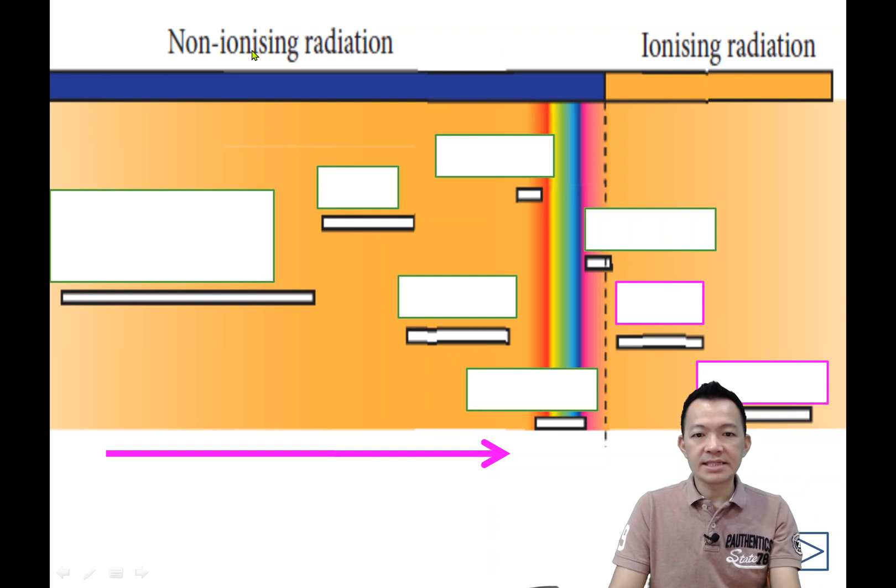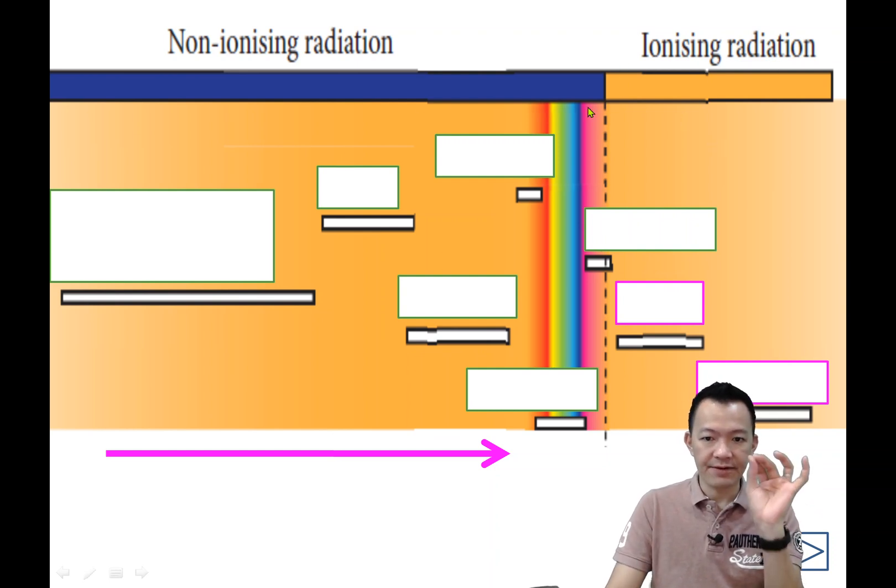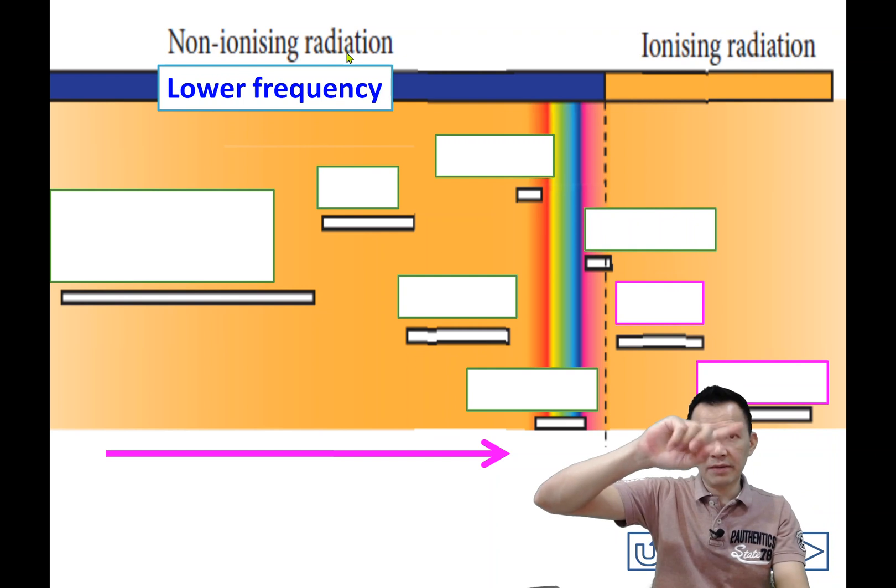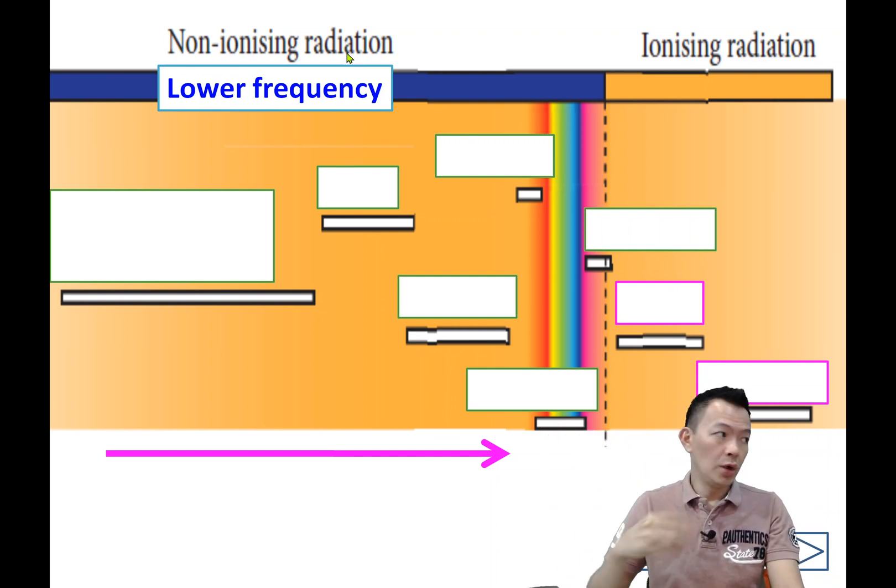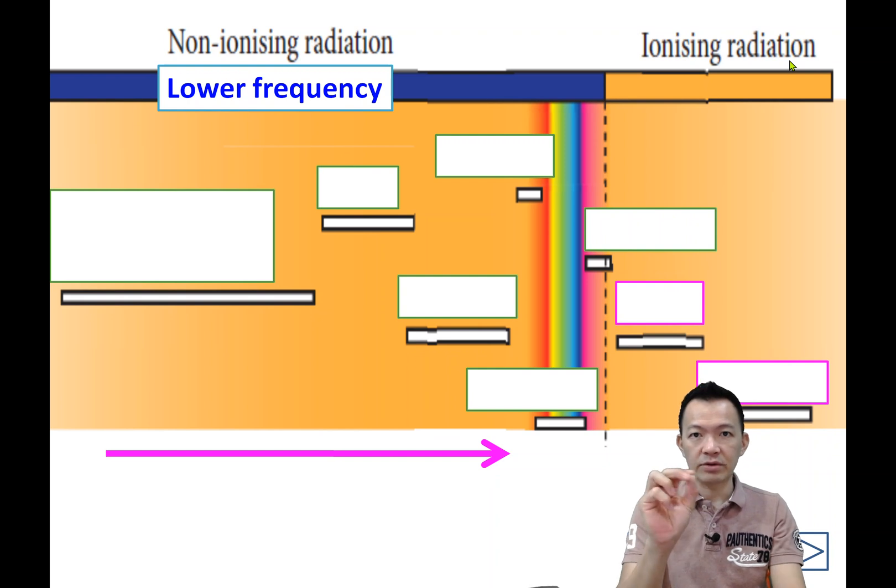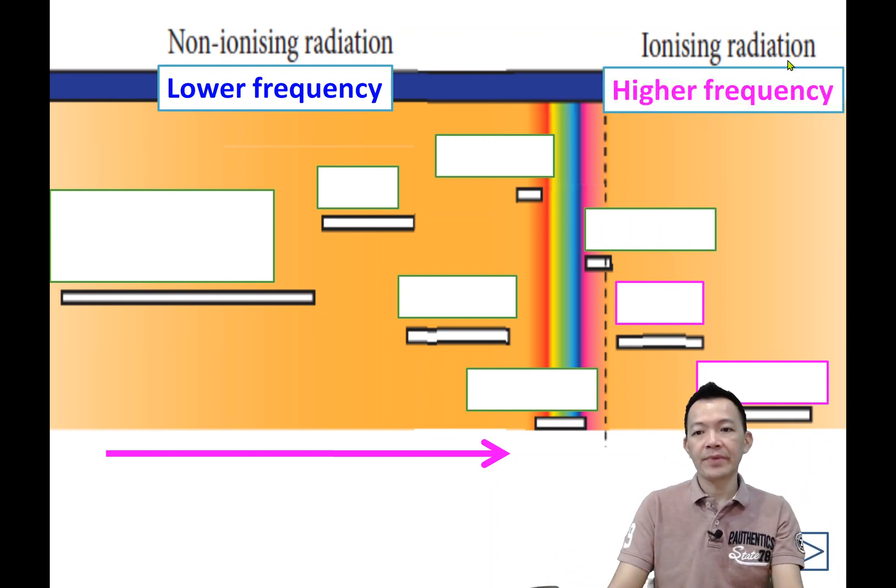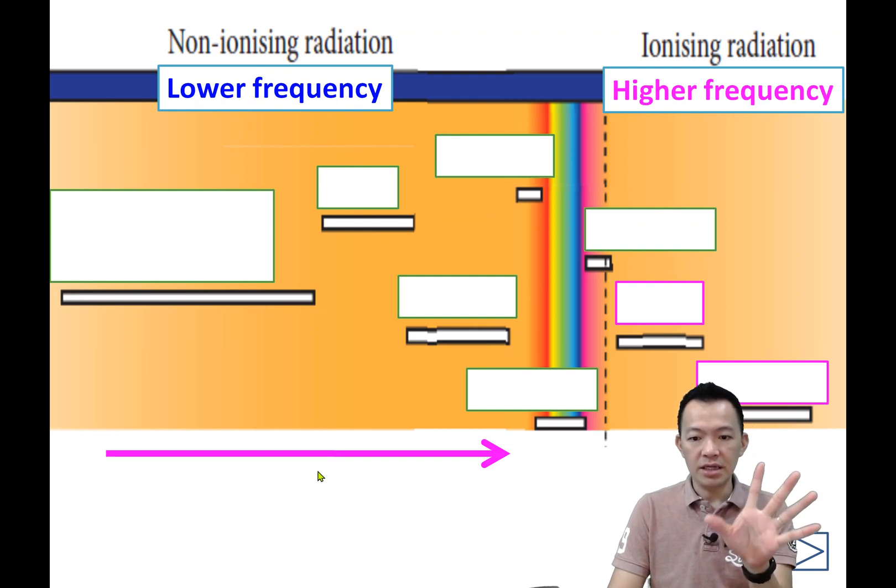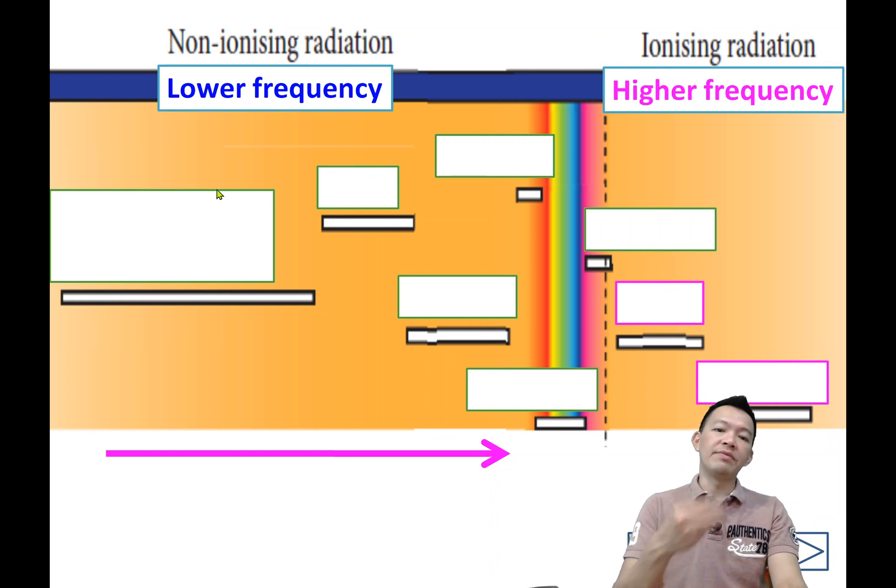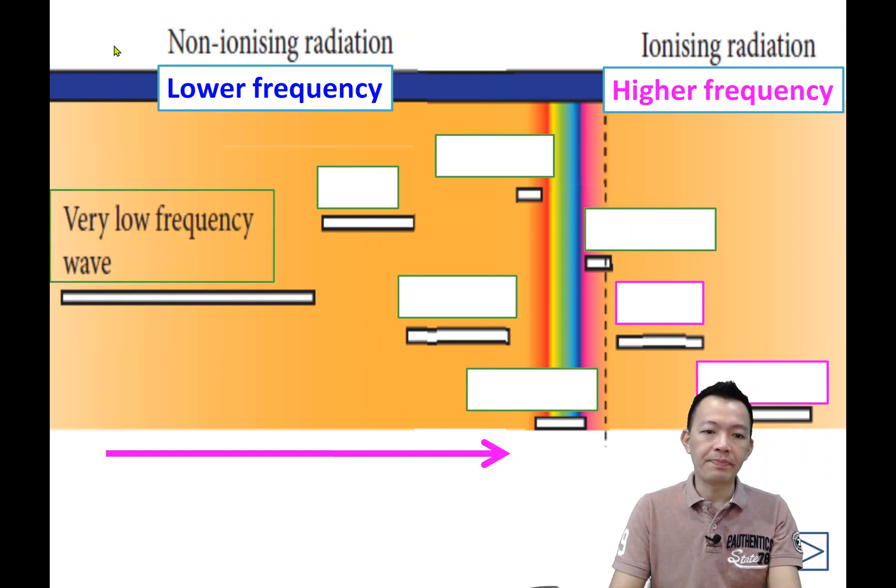So any examples of non-ionizing radiation or ionizing radiation? What are the differences? For non-ionizing radiation, normally there will be low frequency. From this diagram, from left to right, the frequency of radiation becomes higher.